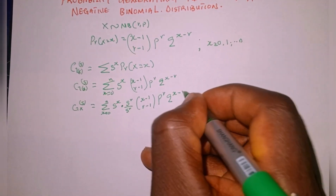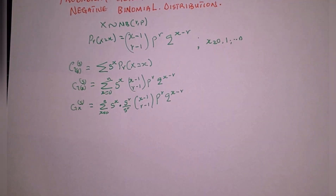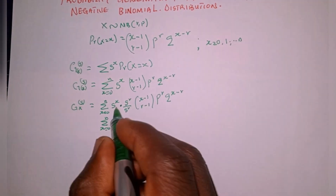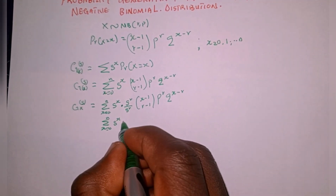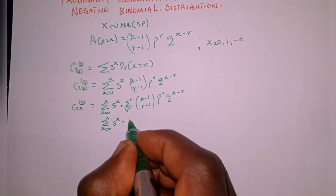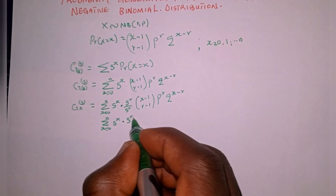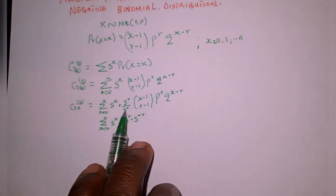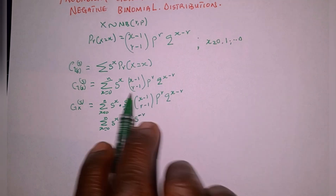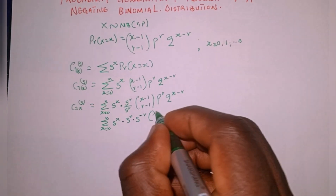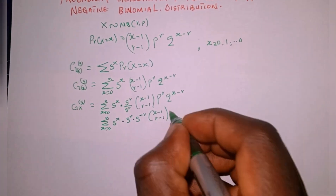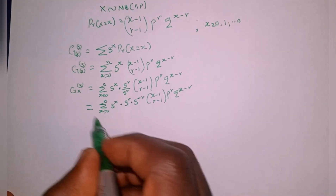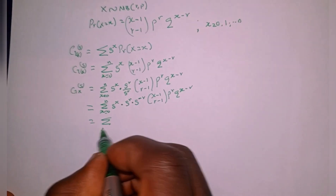We know this can also be written as the summation from x equals zero to n of s raised to the power of x, multiplied by x raised to the power of r — when s to the power of r goes up it turns to the inverse — giving us x minus one combination r minus one, p raised to the power of r, q raised to the power of x minus r.